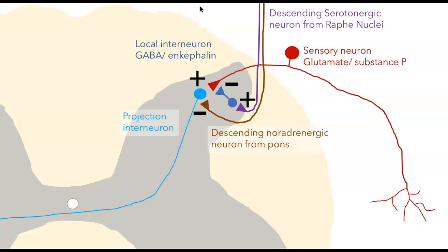Enkephalin is what's called an endogenous opioid — a natural transmitter produced by our own bodies. It binds to opioid receptors to inhibit pain, and these same receptors are targeted by exogenous opioids such as morphine. Spinal analgesics can exert their effects by working on this system.